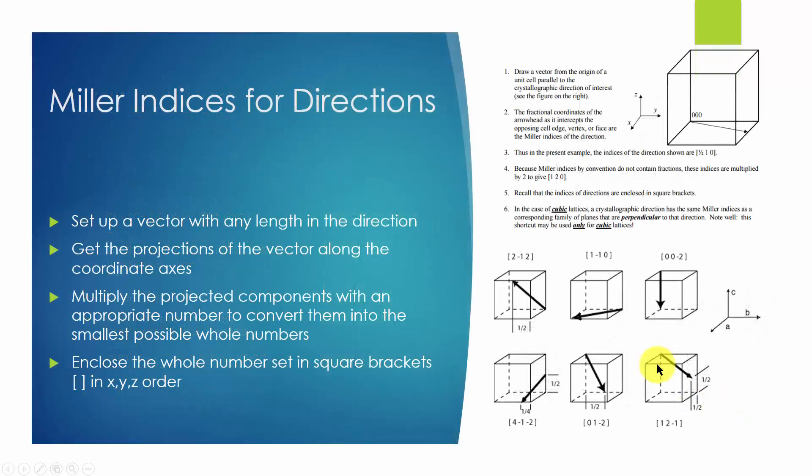The Miller indices for a direction are established by decomposing a vector in the direction into its components. Let's look at the direction in this example. This vector's x-axis projection value is 1/2, y-axis projection value is 1, z-axis projection value is 0.